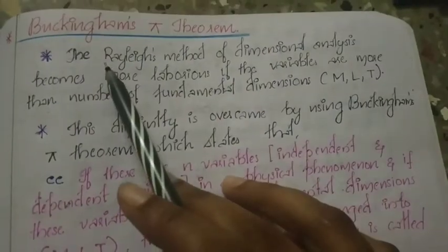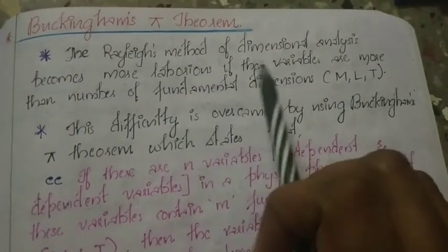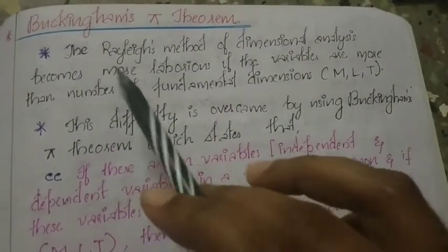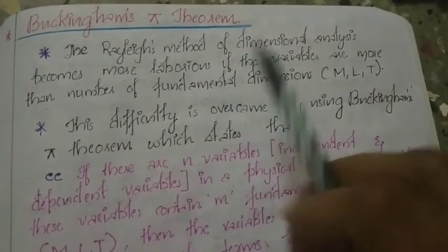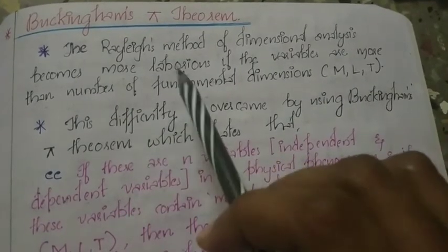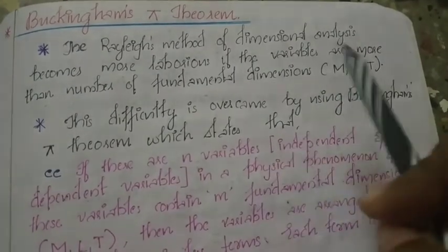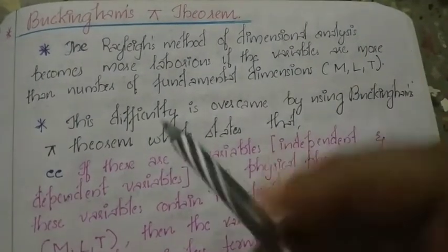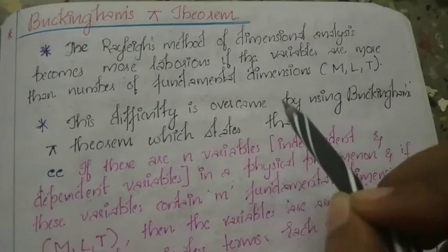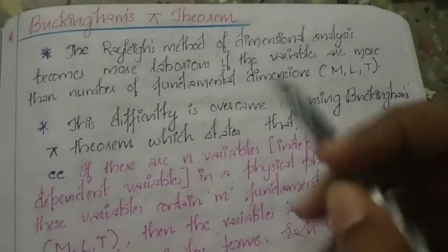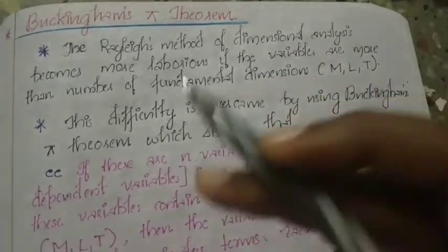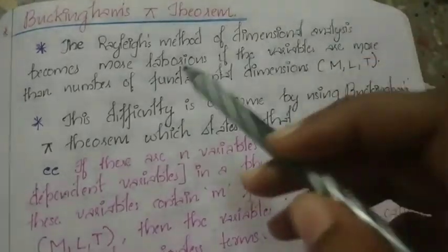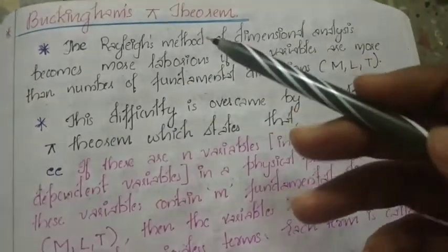Rayleigh's Method of Dimensional Analysis becomes more laborious when the variables are more than the number of fundamental dimensions — MLT. When variables are more, Rayleigh's Method becomes difficult.